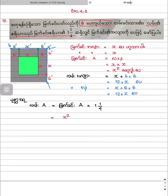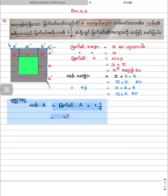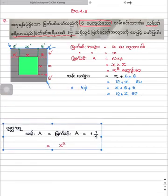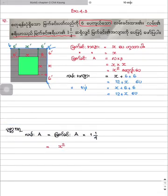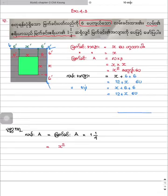If you have a problem, you can do it. This means you can control it. If you can't see the entire area, you must be able to see the area. That is why you have the area of the area to be able to see the area. Now, the area of the area is about this.